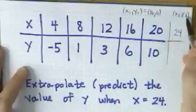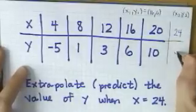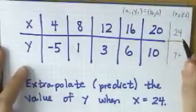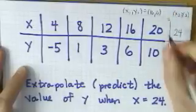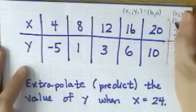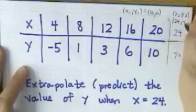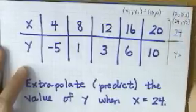Unfortunately though, we don't know the value for y2. That's the value that we're trying to predict, but we do have the value for x2. That of course is 24. That's the given value in the problem. So I'm going to fill in 24 here, but the y2, I don't have that value.